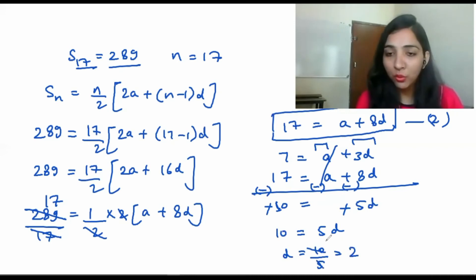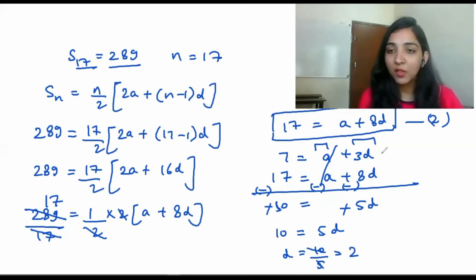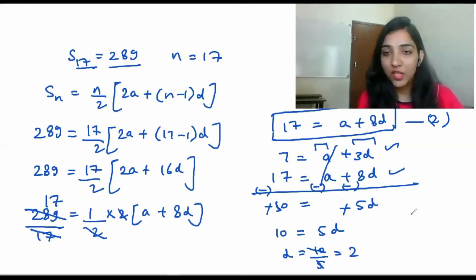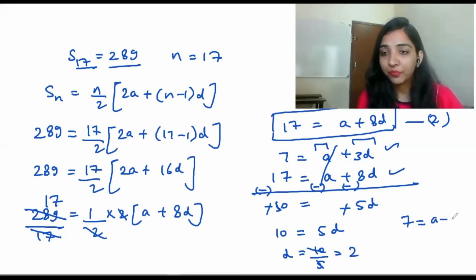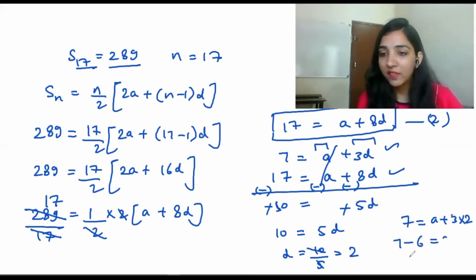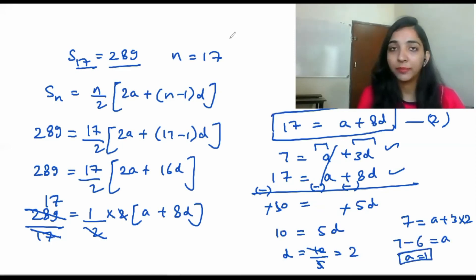Now that we have d = 2, we substitute into the first equation to find a. From equation 1: 7 = a + 3×2, so 7 = a + 6, giving a = 1.